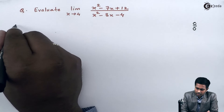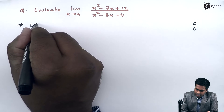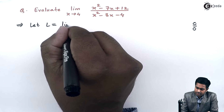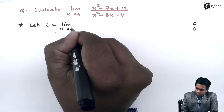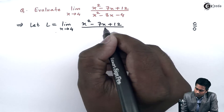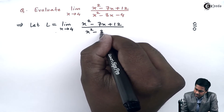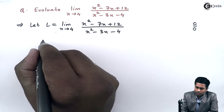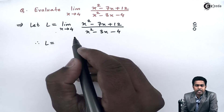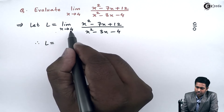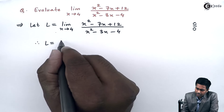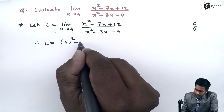I'll consider this given limit as L: the limit as x tends to 4 of (x² - 7x + 12) upon (x² - 3x - 4). Let's see what we get by direct method. In direct method we substitute the value directly in the given function, so this becomes 4² - 7×4 + 12 upon 4² - 3×4 - 4.